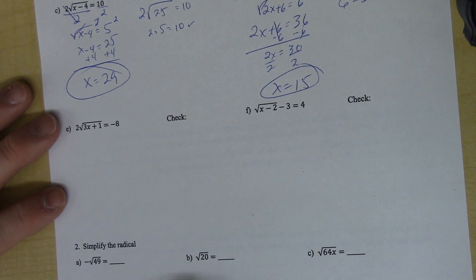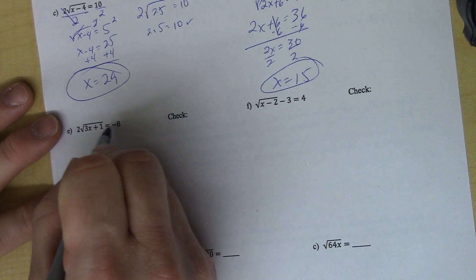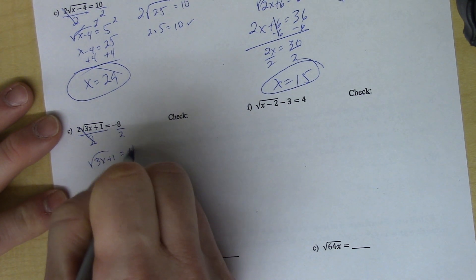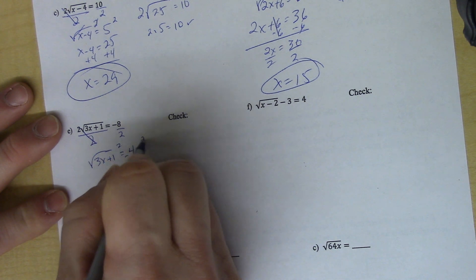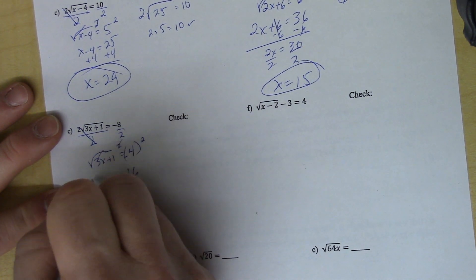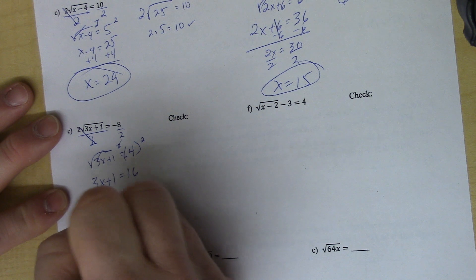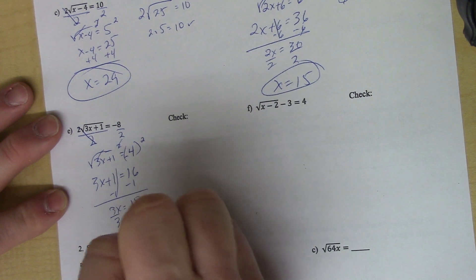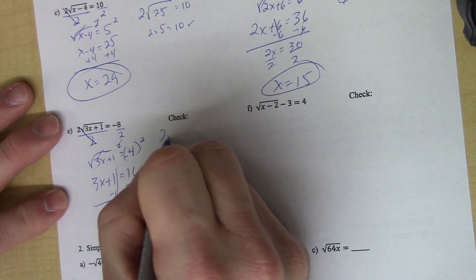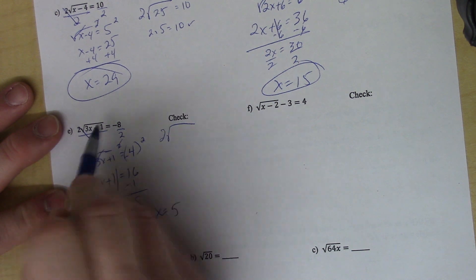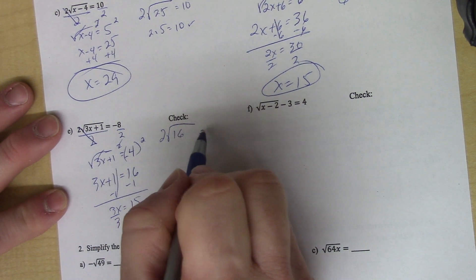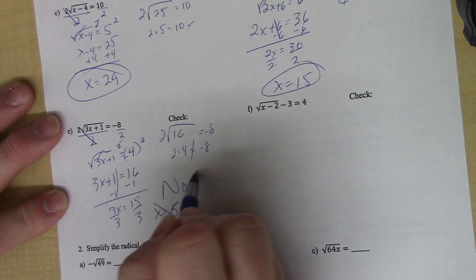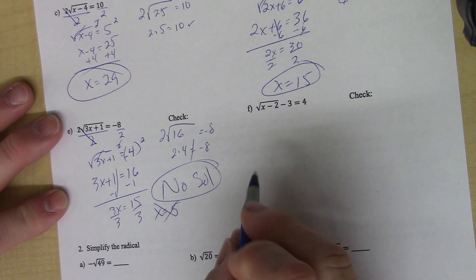The last two problems on this page that I want to go over. On this one, again, there's nothing to add or subtract, so I'm going to divide by 2 first. And then I'm going to square both sides. And again, that gives me 16, and those will cancel. They'll give me 3x plus 1. And then it's just, again, the steps from there. x equals 5. Go back and plug it in. 2 times 3 times 5 is 15 plus 1 is 16. And 2 times 4 is 8, not negative 8. So that doesn't work. And again, this one is another no solution.